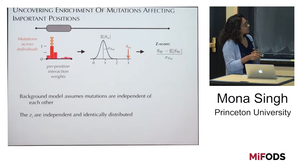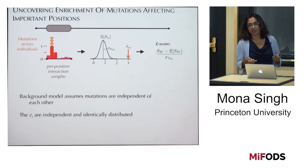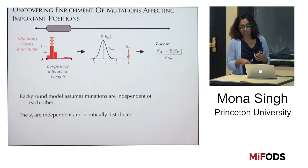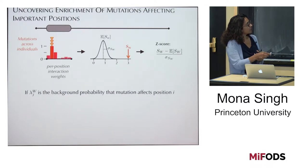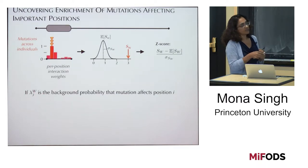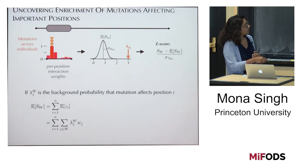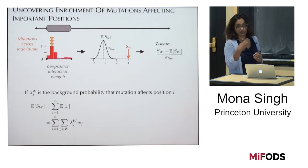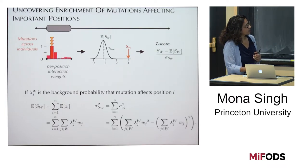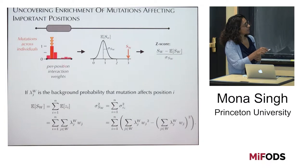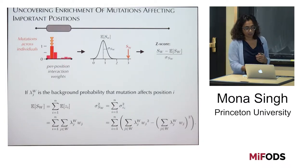When mutations don't fall equally likely in each position, we can have some background probability lambda for each position — from biological knowledge. We can compute the expected value of this score as the sum of expected values of individual z_i's. And because mutations are independent, we can also split up the variance into the variance of the individual components. That means instead of doing permutation calculations, we can just compute these values analytically.